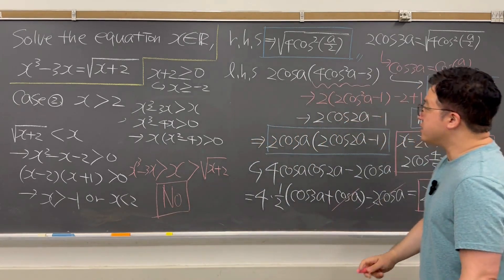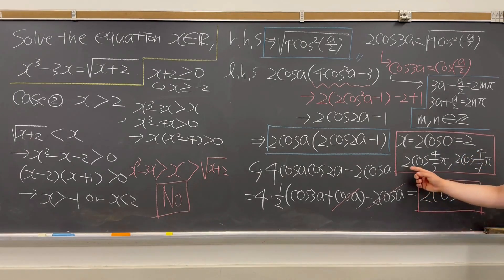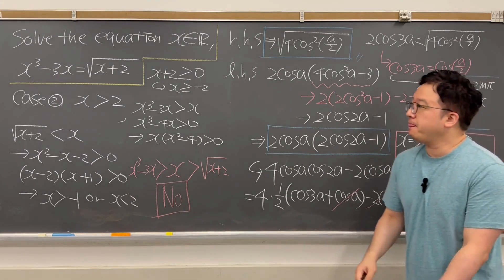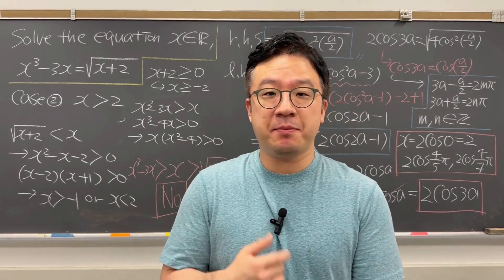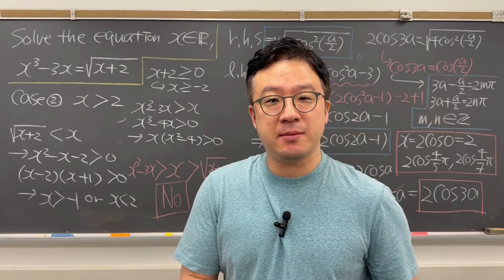So the final solution for this question is all three numbers we found: x equals 2, x equals 2 cosine(4π/5), and x equals 2 cosine(4π/7). That is the final solution. Pretty interesting algebra question — I'll be back with more videos with more questions like this soon.